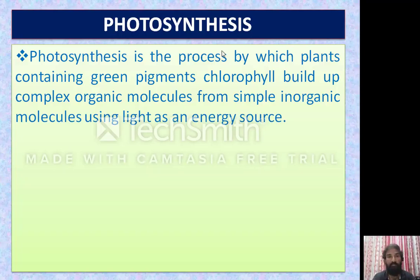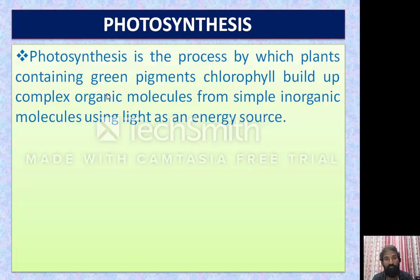In the process of photosynthesis, plants produce complex organic molecules. The first complex organic molecule they form is glucose. Later, this glucose is converted into starch or cellulose according to the plant's need. The simple inorganic molecules involved in photosynthesis are mainly water and carbon dioxide. In the presence of chlorophyll, these build complex organic molecules like sugars. This is called photosynthesis.